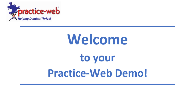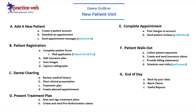We're going to discuss the following items. It's lettered and moves from the top left down and back to the top right and down. On letter A, we add a new patient, discussing three items: creating an account, scheduling appointments, and sending out messages.